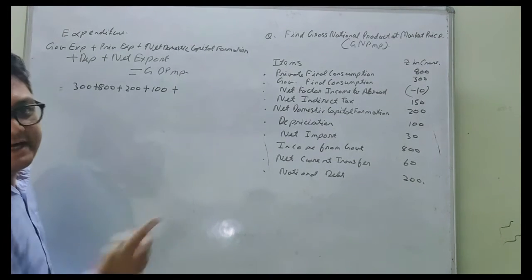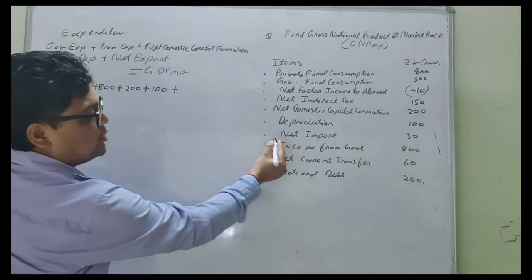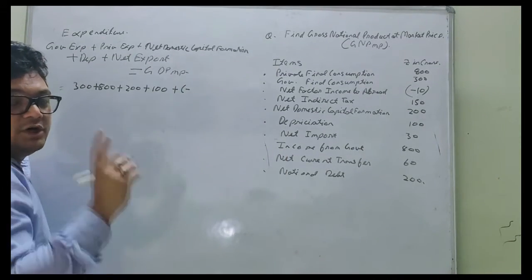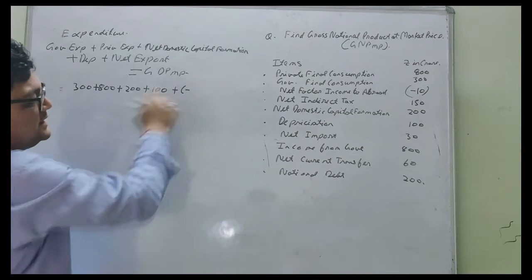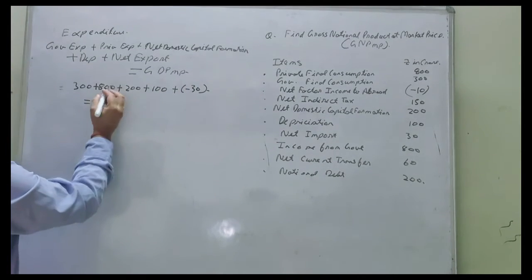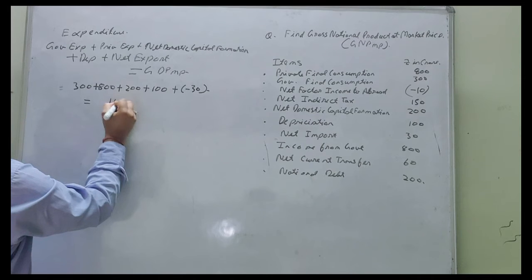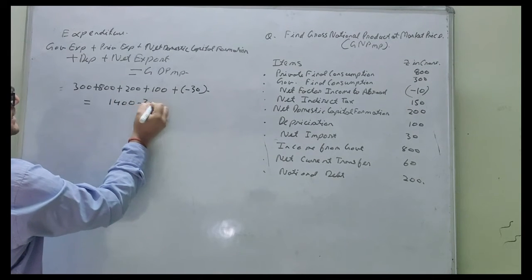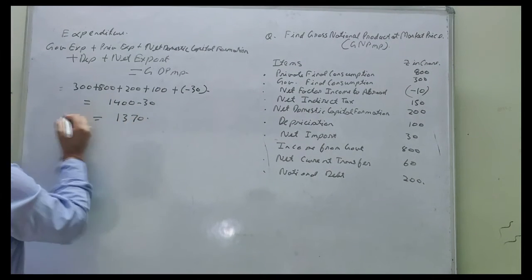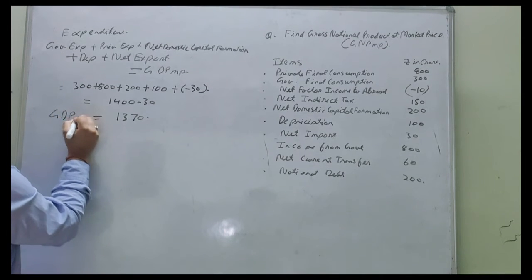In the question net export is not given, net import is given. So net import we will minus. As you know, export minus import equals net export. So we will minus net import. It will become 1400 less 30, which is 1370, will be the GDP MP.